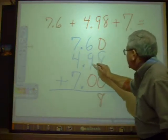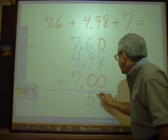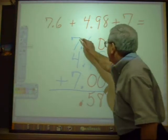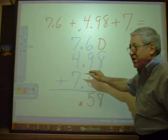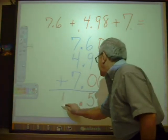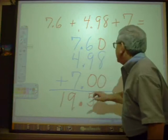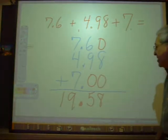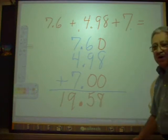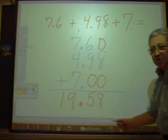We have eight. Six and nine is fifteen. Decimal point. Carrying one. Seven and one is eight. Four is twelve. And seven is nineteen. So seven point six plus four point nine eight plus seven is nineteen point five eight. Nineteen and fifty eight hundredths.